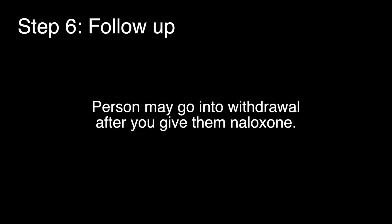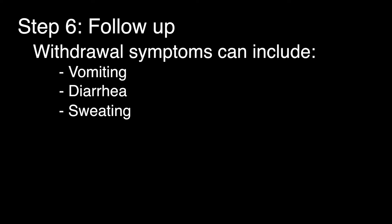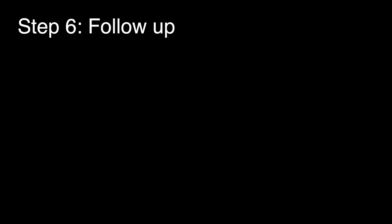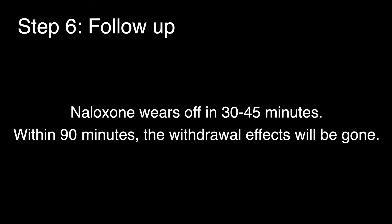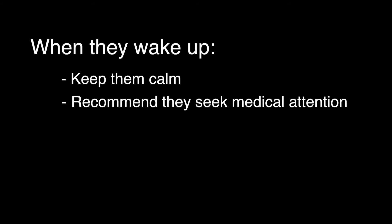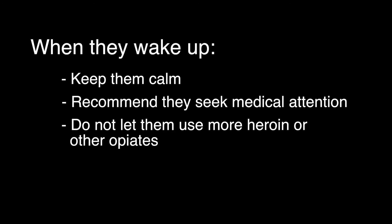Step 6: Follow-up. If the person is dependent on heroin or other opiates, they may go into withdrawal after you give them Naloxone. Withdrawal symptoms can include vomiting, diarrhea, sweating, and agitated behavior. This may be unpleasant and dramatic, but it is not life threatening and only lasts until the Naloxone wears off. Tell them that Naloxone wears off in 30 to 45 minutes and there are still drugs in their system. Within 90 minutes, the withdrawal effects will be gone. Watch the person for at least an hour or until emergency medical services arrive in case they go back into overdose. When they wake up, keep them calm. Recommend that they seek medical attention and help them if necessary. Do not let them use more heroin or other opiates — the Naloxone will block it and they could overdose again once the Naloxone wears off.